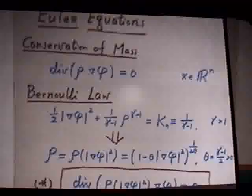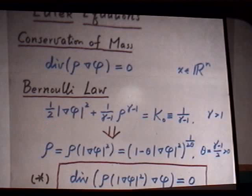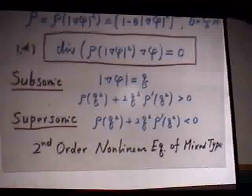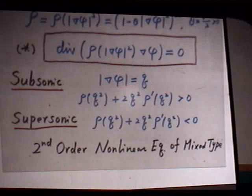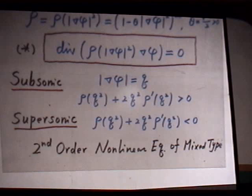This equation is of mixed type. At a given point, if |∇φ| < c_* (the critical sonic speed), the flow is subsonic and the equation is elliptic. If |∇φ| > c_*, the flow is supersonic and the equation is hyperbolic. So this is a second-order nonlinear equation of mixed type. For the linear model, two well-known equations exist: the Tricomi equation ∂_{xx}u + y ∂_{yy}u = 0, and the Keldish equation y ∂_{xx}u + ∂_{yy}u = 0. A general linear theory was well-established over the last century for these equations.